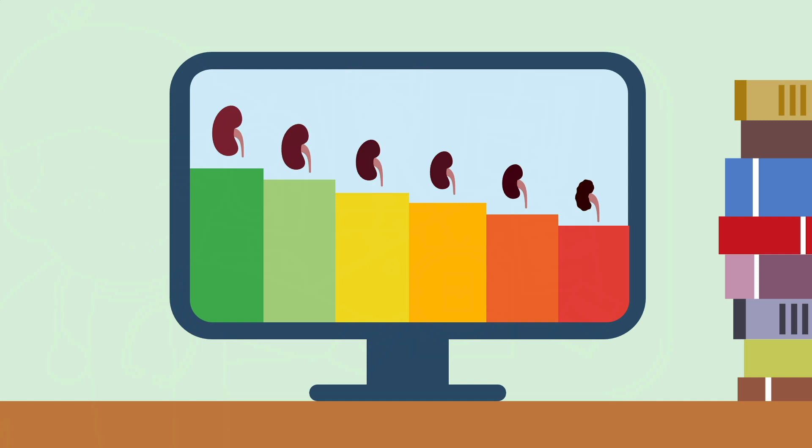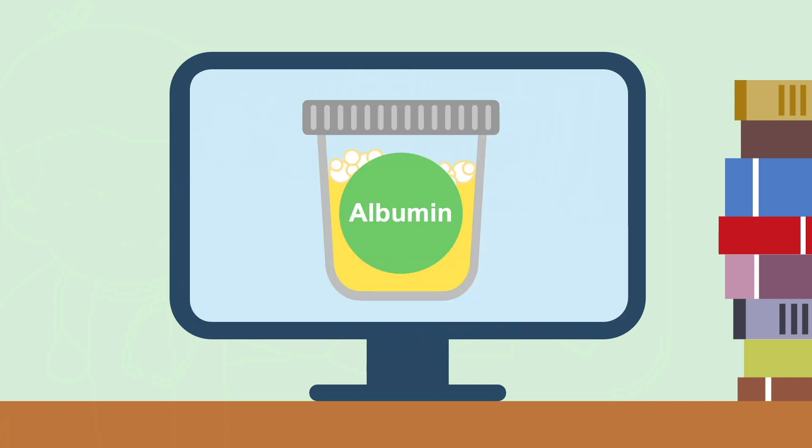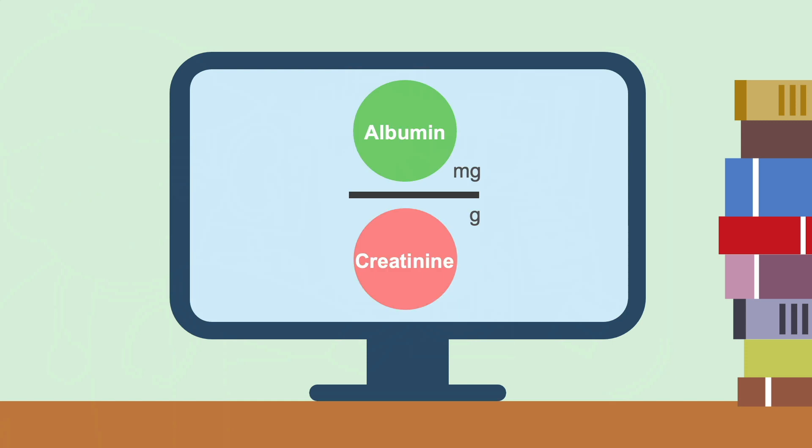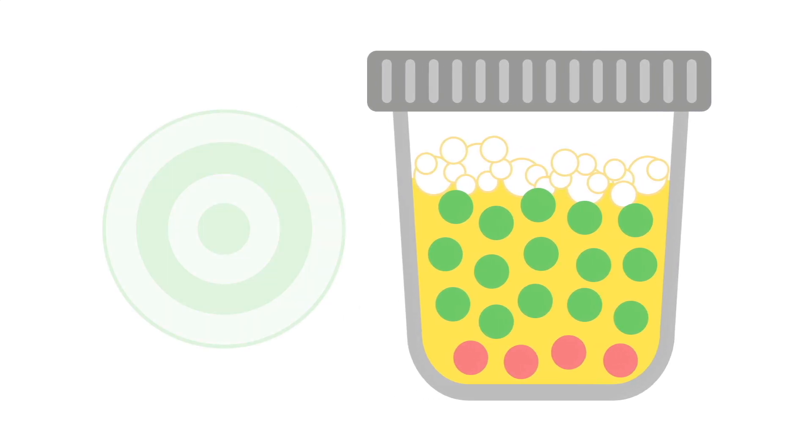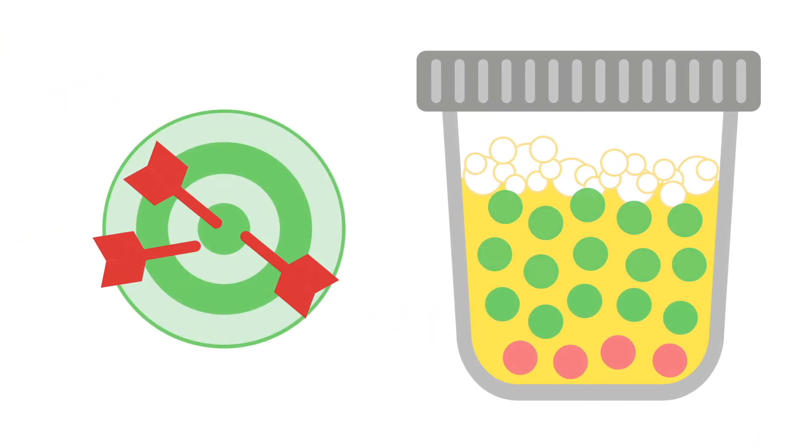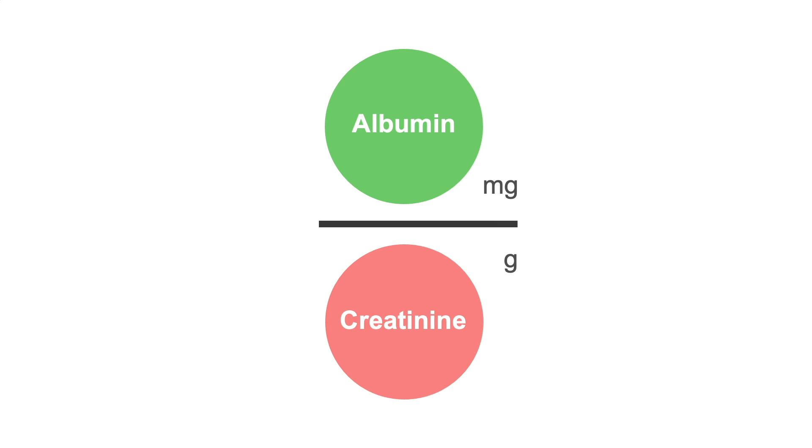When staging CKD, guidelines recommend determining the amount of albumin in the urine using the urine albumin creatinine ratio. Assays specific for albumin are more likely to be standardized and have better precision at lower values of albuminuria.